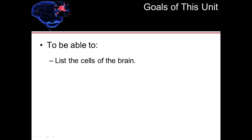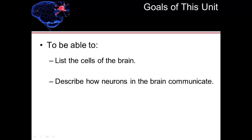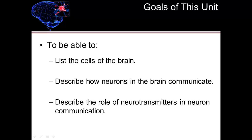The goals of this unit are to be able to list the cells of the brain, describe how neurons in the brain communicate, and to describe the role of neurotransmitters in neuron communication.